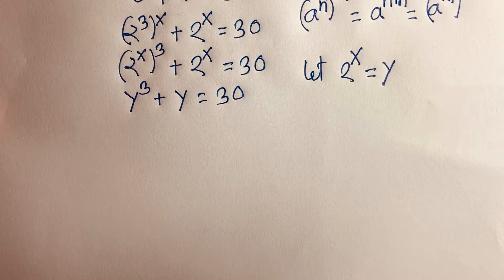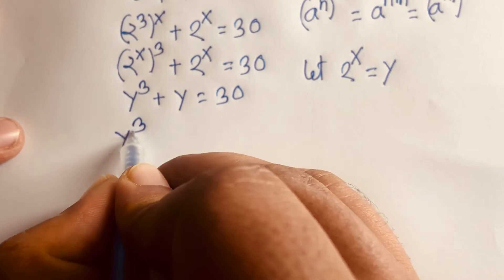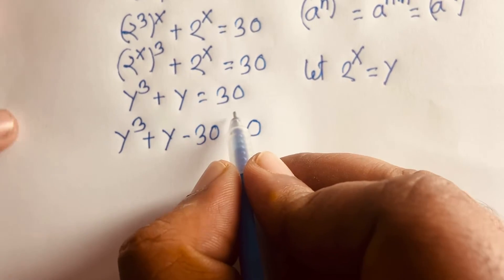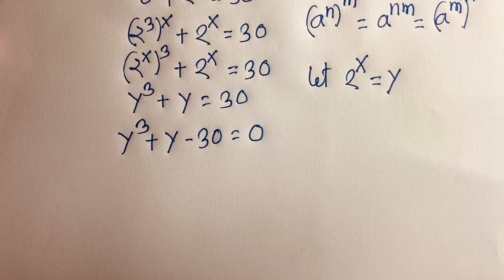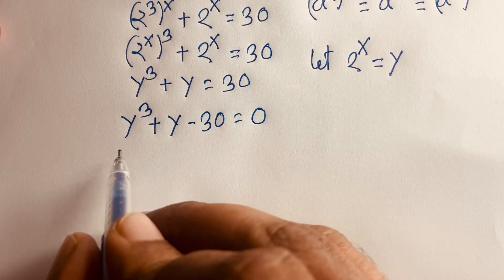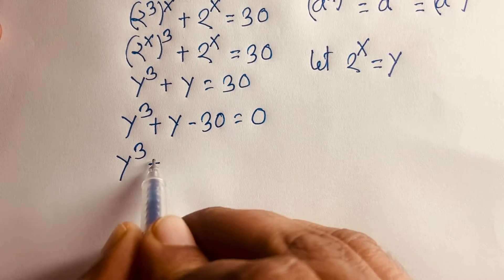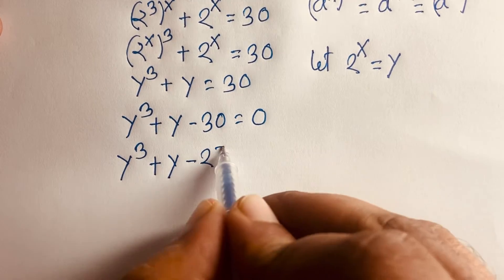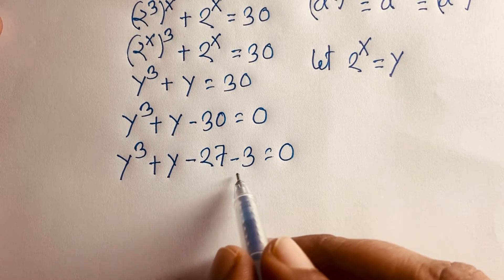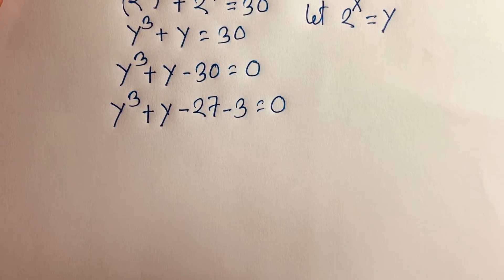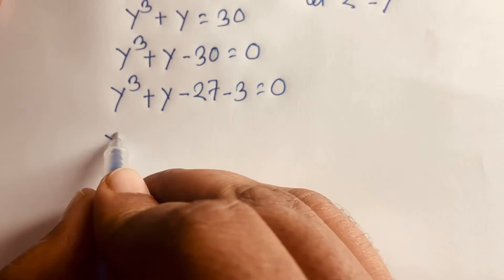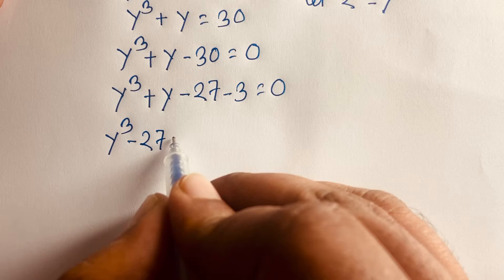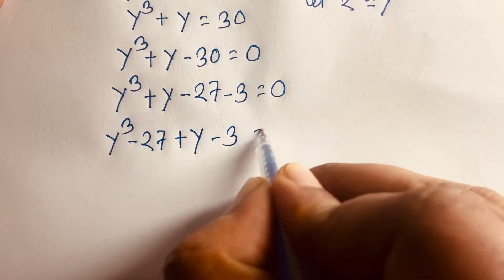Rearranging, we get y³ + y − 30 = 0. We can decompose −30 as −27 − 3, since 27 + 3 = 30. So the equation becomes y³ − 27 + y − 3 = 0.